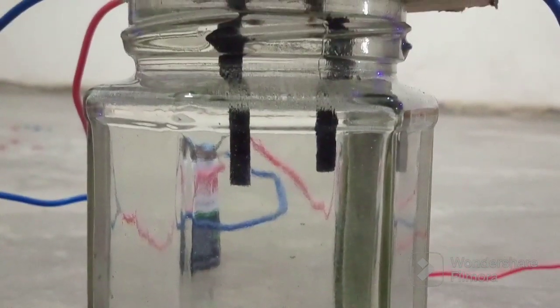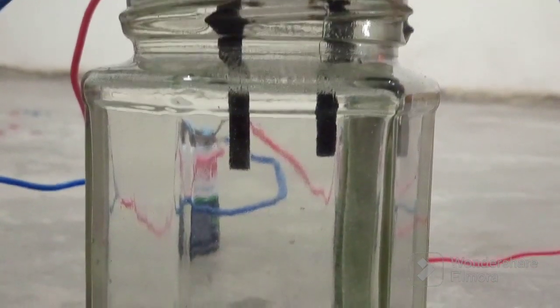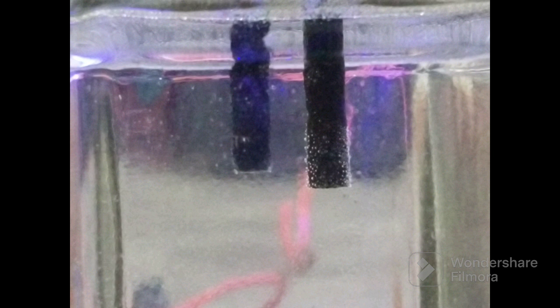Now you can see the final result of this activity. There are lots of bubbles which formed on the graphite rod. That is the final result. Thank you.